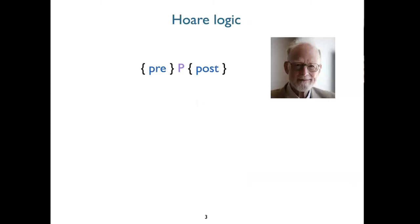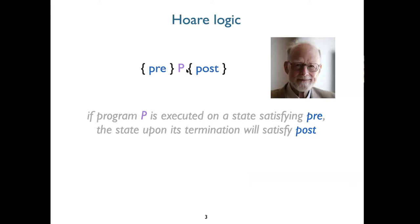Hopefully this is familiar: this triple over here is a partial correctness triple. Intuitively, what it means is that if a program P is executed on a state satisfying precondition pre, then if P terminates, the state upon termination will satisfy postcondition post. It's reasoning in this direction — regardless of what initial states you execute on, as long as it satisfies pre, you're guaranteed to satisfy the postcondition.